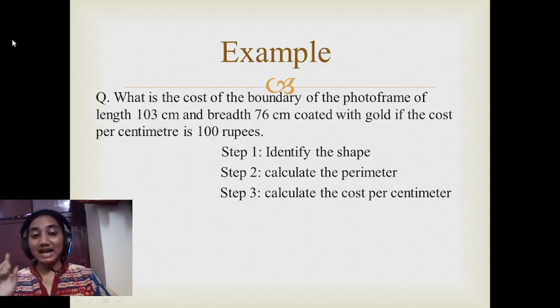Step 1: Identify the shape. Is it square, rectangle, or triangle? Since length and breadth are given, it is a rectangle. Step 2: Calculate the perimeter. We have the formulas which we will be seeing in the upcoming slides. And next, calculate the cost.